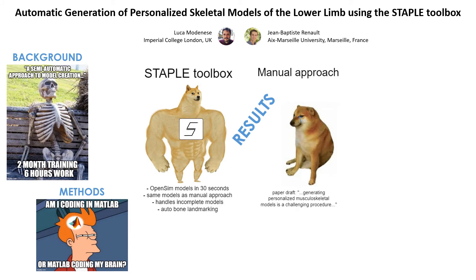We compared the models built with STAPLE against models created by manual operators for four anatomical datasets, and we found that, if the bone geometries are of good quality, all joint parameters were comparable to human interoperator variability, with the exception of the pelvis-ground joint. When walking was simulated, the joint angles obtained by the two approaches differed only due to a systematic pelvic tilt offset which propagated to hip flexion.